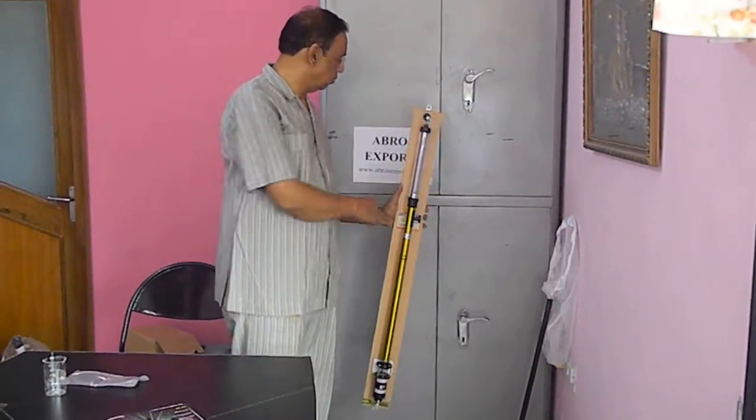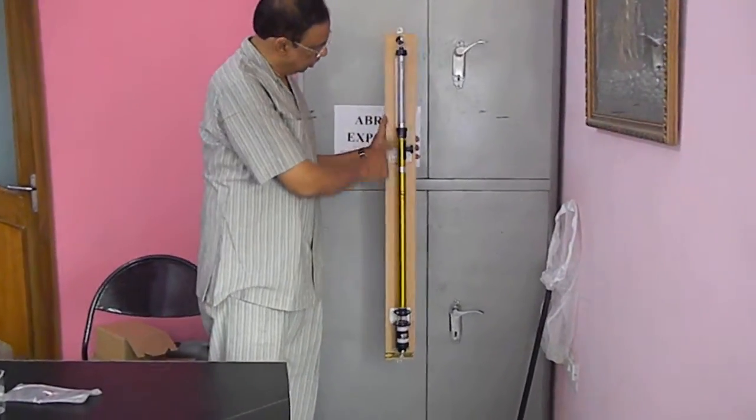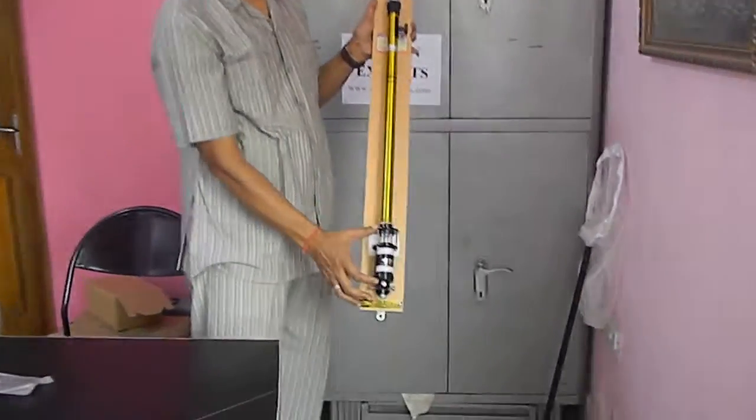We will tell you how to fill the barometer by Abron Export. This is a multi barometer. It has two parts. One is a glass part which is a scale. Another is a mercury chamber.